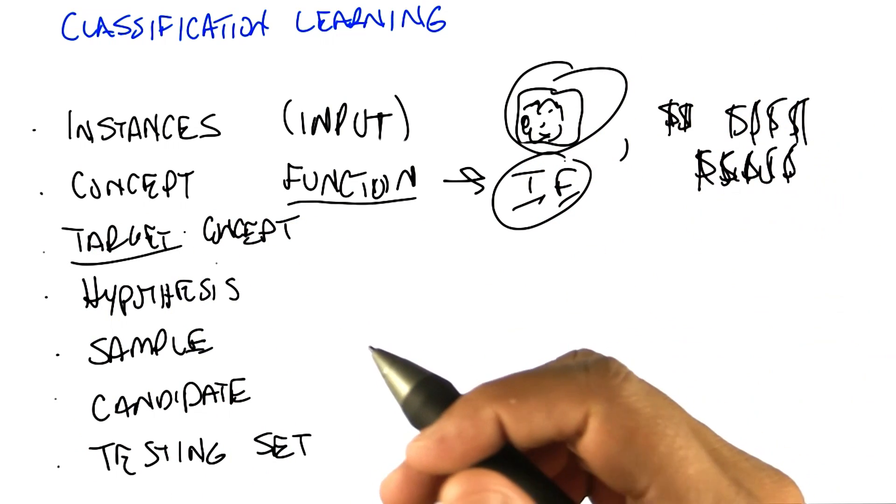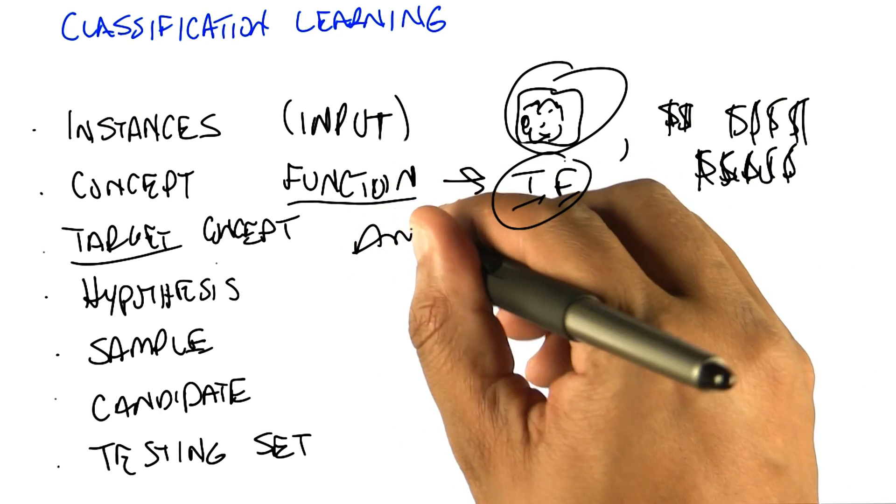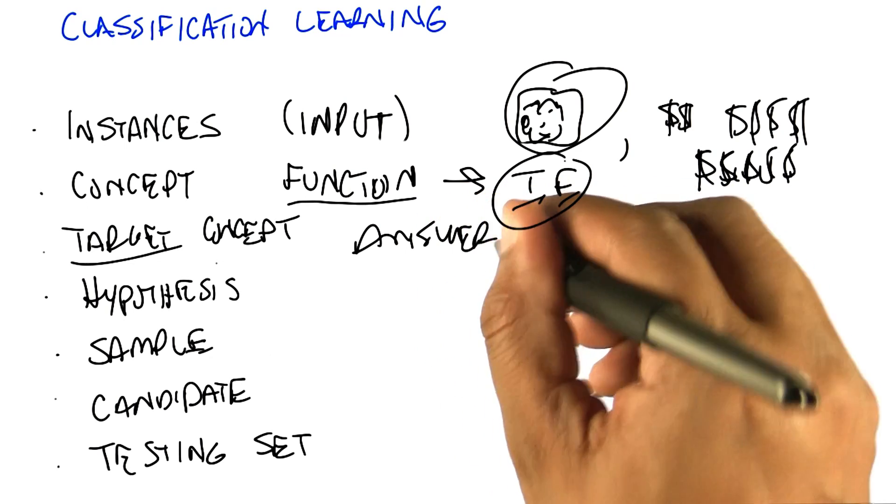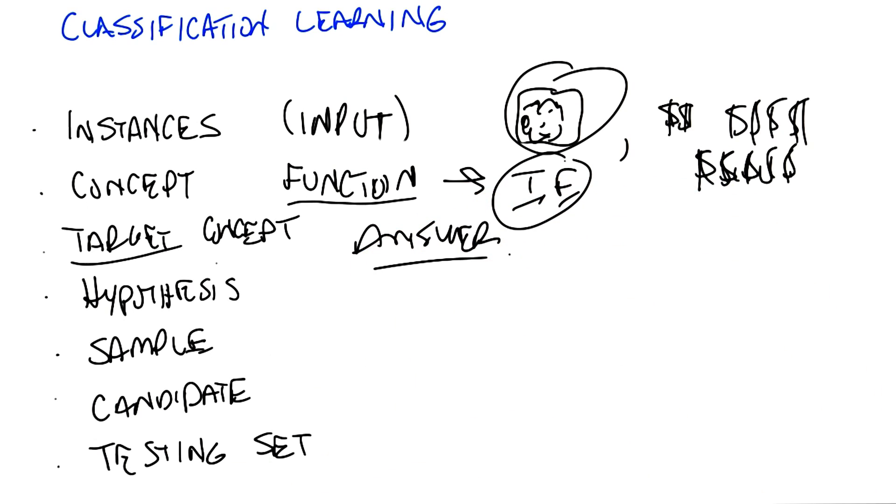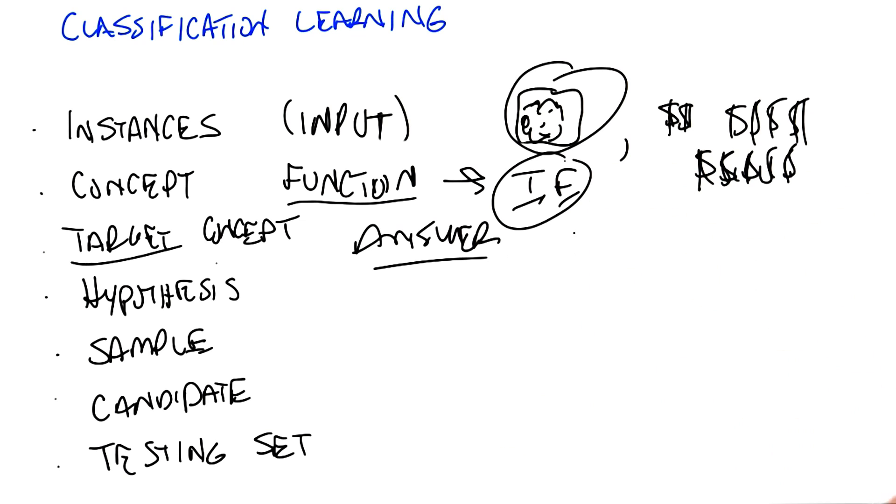The only difference between a target concept and the general notion of concept is that the target concept is the thing we're trying to find. It's the actual answer. So a function that determines whether something is a car or not, or male or not, is the target concept.